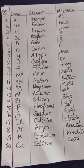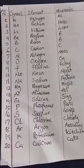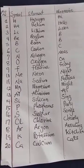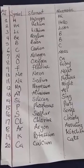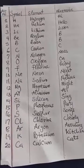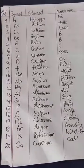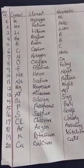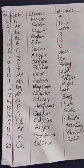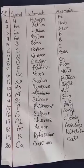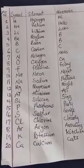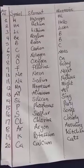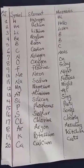Sodium by Na, magnesium by Mg, aluminium by Al, silicon by Si, phosphorus by P, sulfur by S, chlorine by Cl, argon by Ar, potassium by K, calcium by Ca.